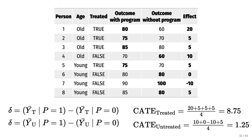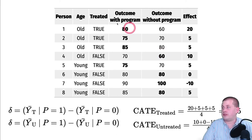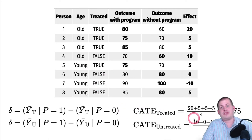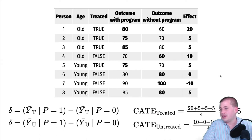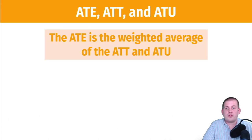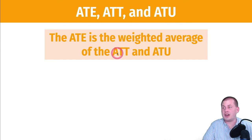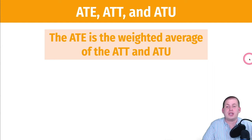The reason ATT and ATU matter is that we can combine them to figure out the average treatment effect. The ATE mathematically is a combination of the ATT and the ATU — we can combine those two to figure out the overall average treatment effect.